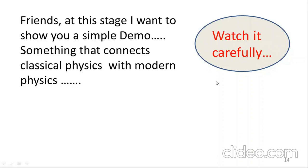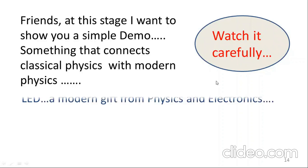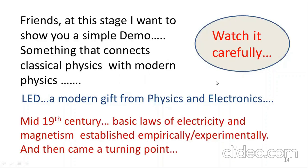The light that is glowing is an LED — a light emitting diode — which is a modern gift from physics and electronics. So from the days of Faraday, we have come to the modern age of LED. For the generation of electricity, we use something like a dynamo or electric generator, so the basic idea is from classical physics. This demo shows the connection from classical physics to modern physics in a single instrument.